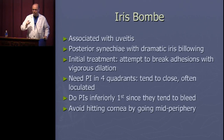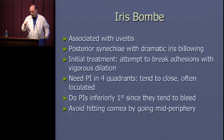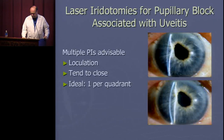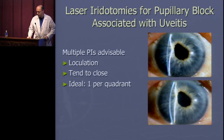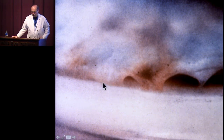When planning multiple iridotomies in uveitic eyes, do the inferior ones first. If you do the superior iridotomy first and it bleeds with blood settling inferiorly, you can't get a good view for the inferior iridotomy. Here's a case of post-cataract-surgery inflammation with pupillary block where iridotomies were done more than once — not unusual with uveitis. Look inferiorly for the kind of adhesions that develop there, and sometimes you see coating with inflammatory debris.